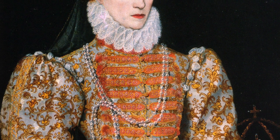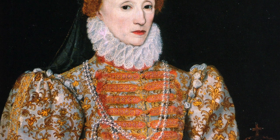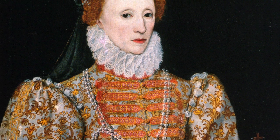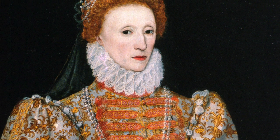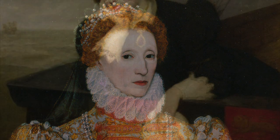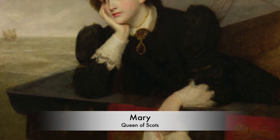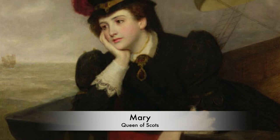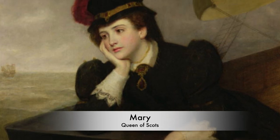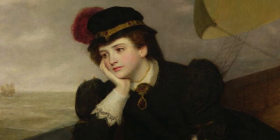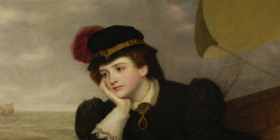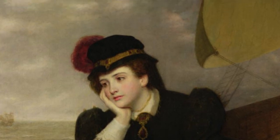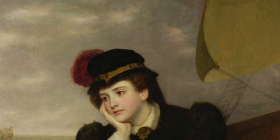Mary, Queen of Scots, was considered by Catholics to be the rightful and legitimate heir to the English throne, and a papal bull issued in February of 1570 even granted Catholics a right to try and overthrow the English Queen Elizabeth. So the Pope, in a sense, was enabling people to try and rid Elizabeth from the throne. Mary became the focal point of these plots.